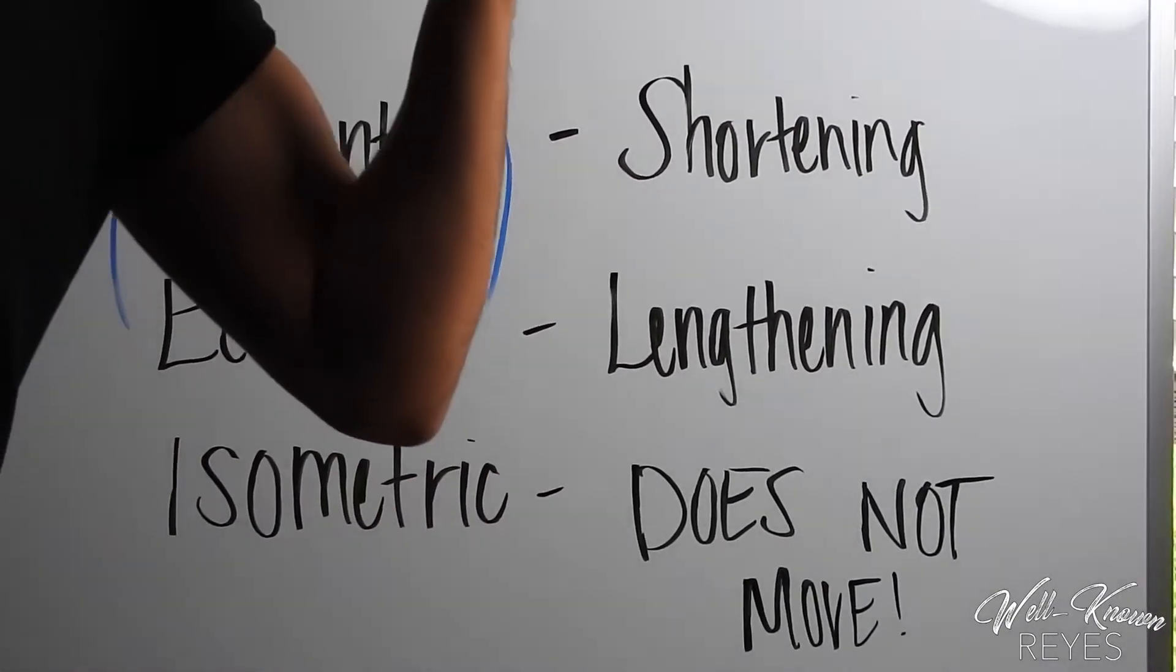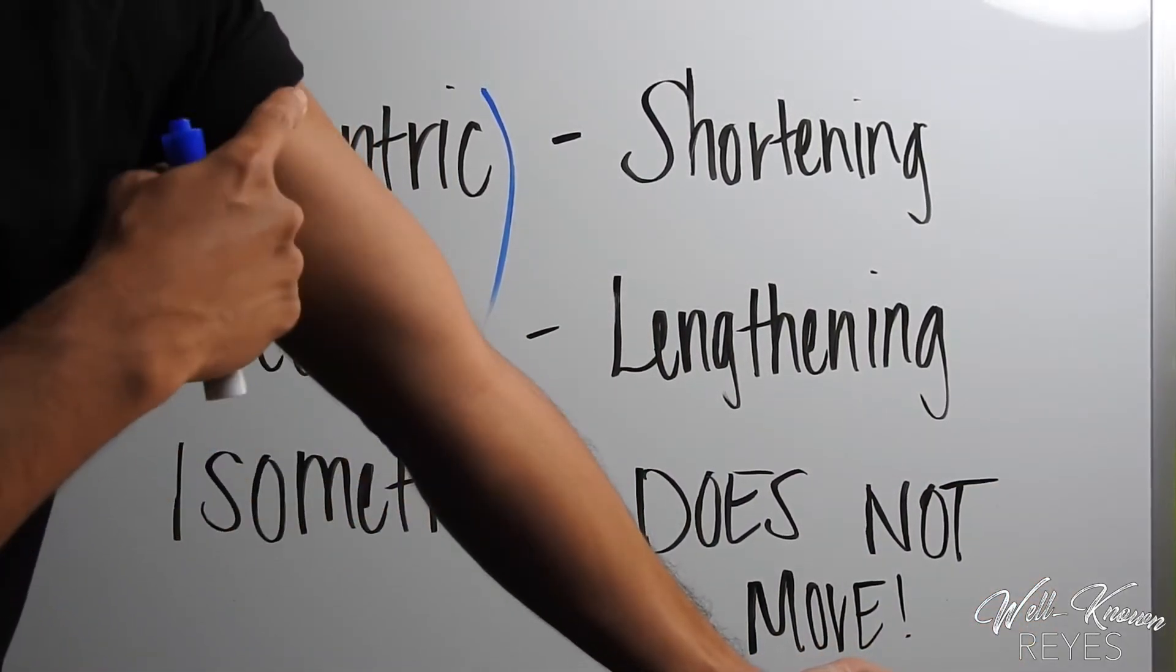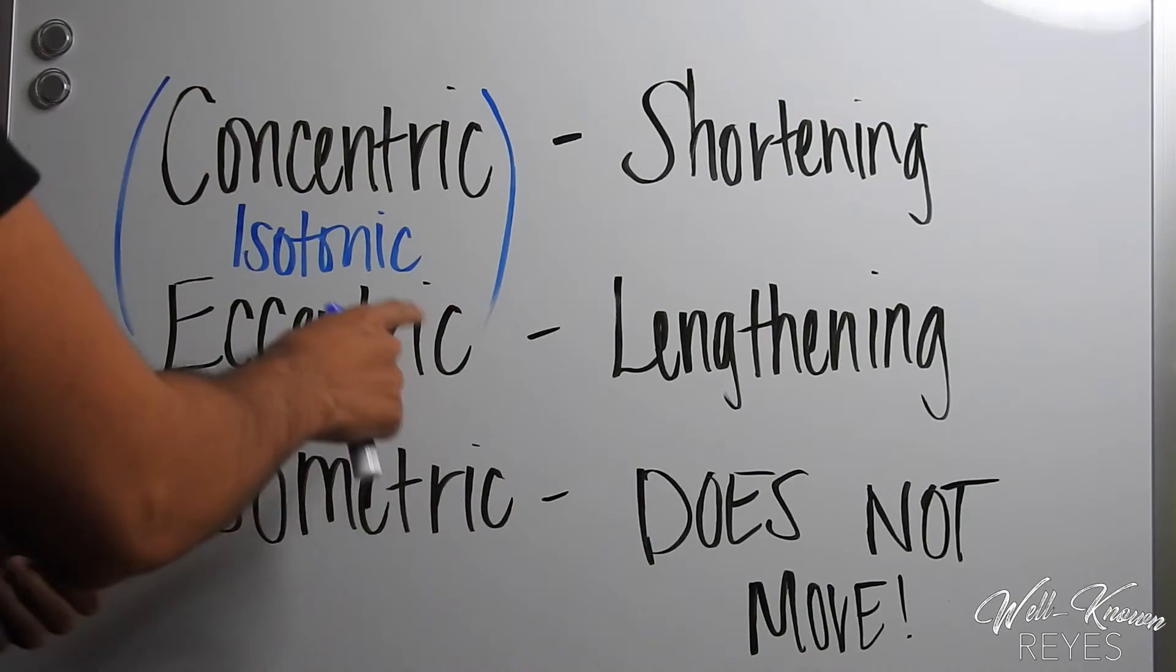Now to get it eccentric, I'm going to lengthen the bicep. So now my muscle fibers are lengthened. This is in its entirety an isotonic contraction.